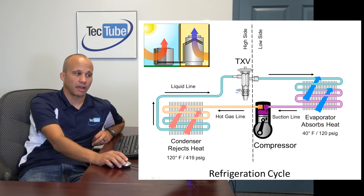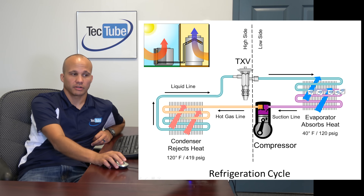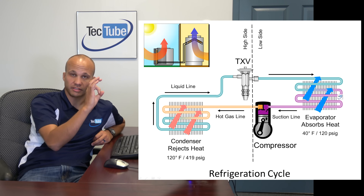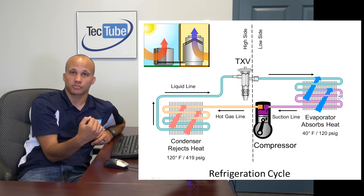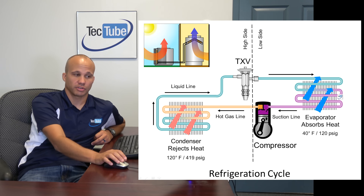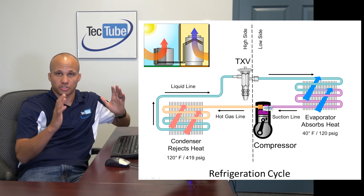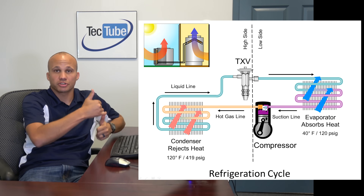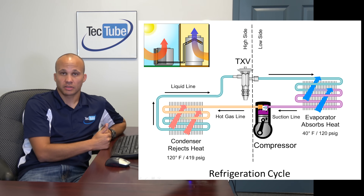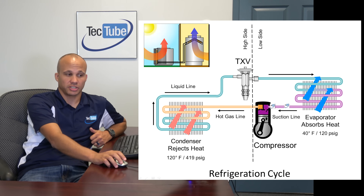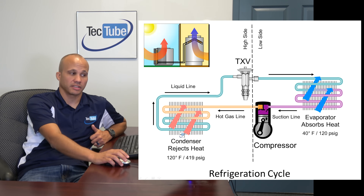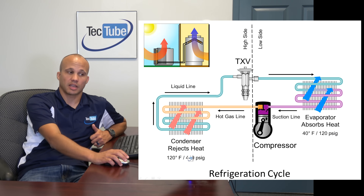Let's follow a refrigerant molecule around the loop, starting with the evaporator. The refrigerant molecule sitting in the evaporator is absorbing heat from the air of your house running through your furnace and evaporator coil assembly. As it absorbs that heat, the temperature of the refrigerant rises, and then it goes into the compressor, where the compressor raises the pressure even more. Because of the fixed volume, raising the pressure also raises the temperature. In our example, we start at 40 degrees in the evaporator coil and end up at 120 degrees in the condenser coil because the pressure was raised from 120 up to 420 PSI.